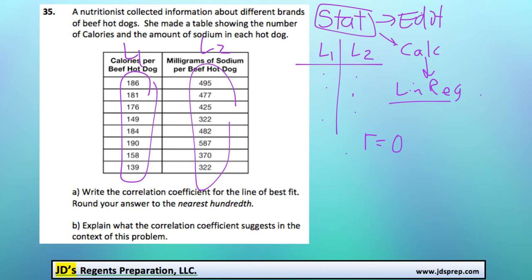On your calculator, you should get a value of 0.9422 and so on. But they want that answer to the nearest hundredth, so we'll round that to 0.94.